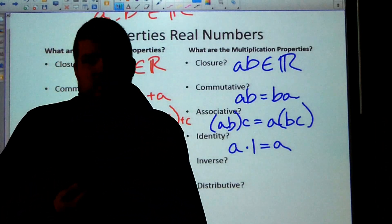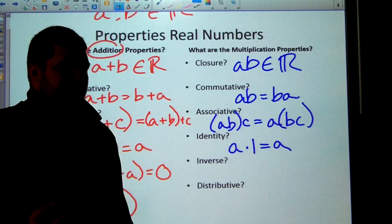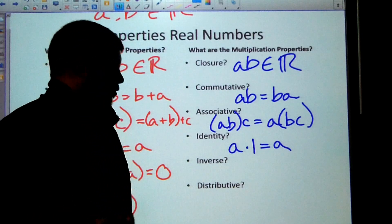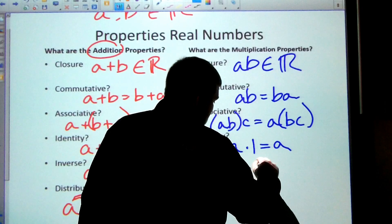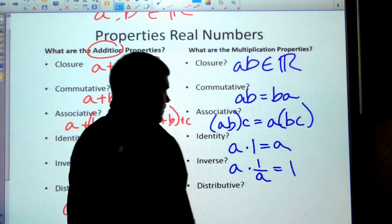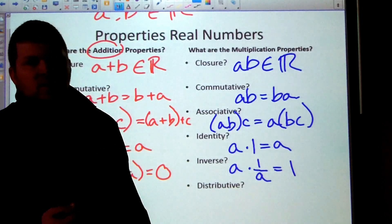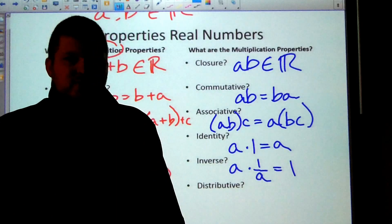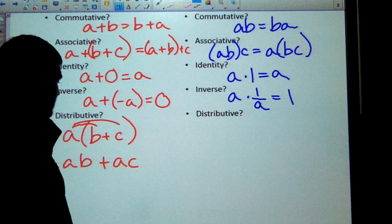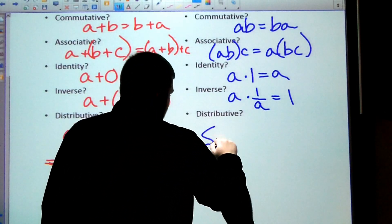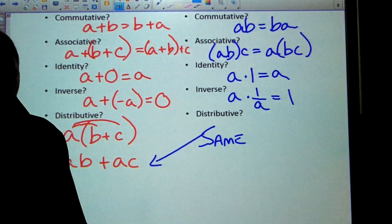And then the inverse, we're looking for something times its multiplicative inverse to get the identity. So something times its multiplicative inverse to get one. And what we're going to do is just take the reciprocal. So A times one over A is equal to one. Think about it. Two times one-half is one. Negative one-half times negative two is positive one. And then finally, the distributive property is actually the same. I don't know why I've done it twice. But it's the same as what we just talked about.